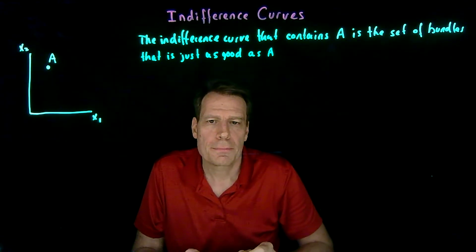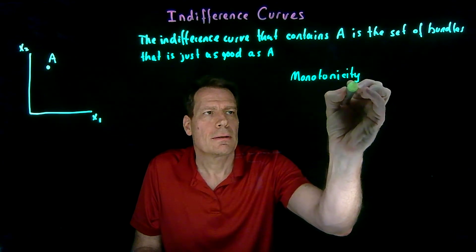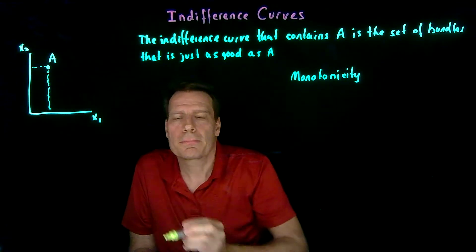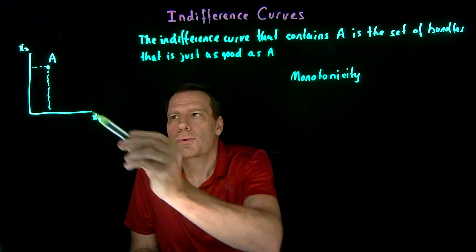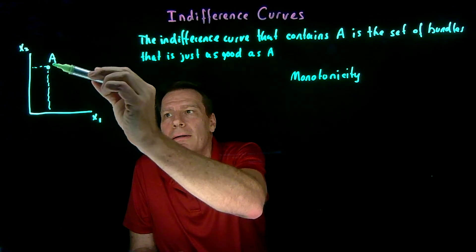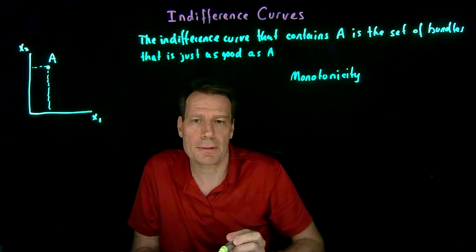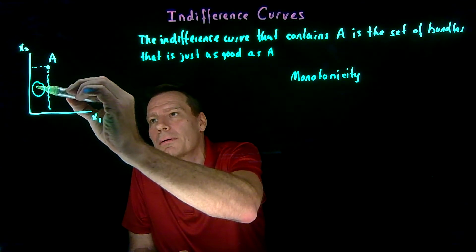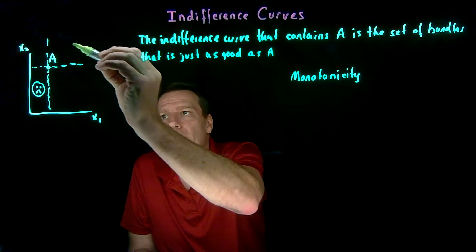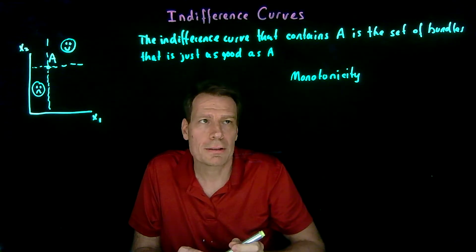So, we start with bundle A and begin to use the monotonicity assumption. Monotonicity says more is better. So if we consider bundles down here in this square, they have less of everything, so all these bundles must be less preferred than bundle A. The bundles that are indifferent to bundle A can't possibly lie down here — monotonicity ensures that because bundle A has more of everything relative to those bundles. By the same token, bundles that have more of everything — bundles that are up here — would make us better off than bundle A, so the indifferent bundles can't possibly lie up there either.